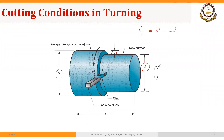So why are we multiplying by 2? Because this is a circular workpiece. For example, if the final diameter we want to achieve is 1.75 and the original diameter is 2.00, we have to use a depth of cut of 0.125 in order to get a final diameter of 1.75.